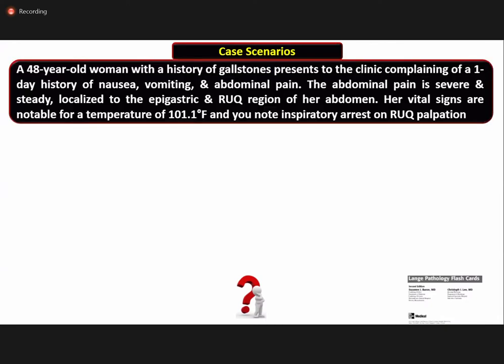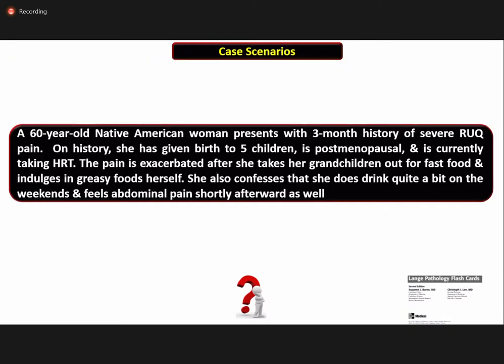We have some clinical scenarios and during the next one hour we are going to find out the answers to these. First is a 48-year-old woman with a history of gallstones presenting to the clinic complaining of a one-day history of nausea, vomiting, and abdominal pain. The pain is severe and steady, localized to the epigastric and right upper quadrant region of her abdomen.